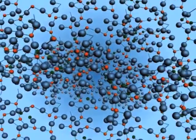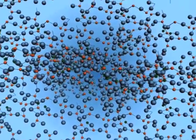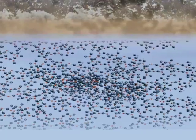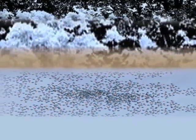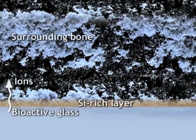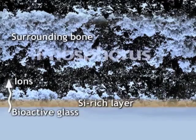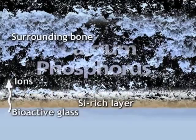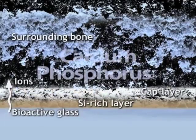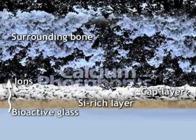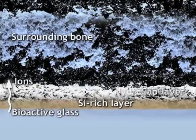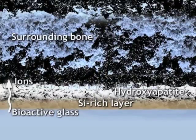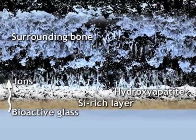In contact with body fluid, Bonolive glass granules will react. First, a silica-rich layer will be built and this layer will act as a template for calcium phosphate precipitation. A second layer on top of the silica-rich layer will be formed — calcium phosphate — which will form a chemical bond to the surrounding bone.